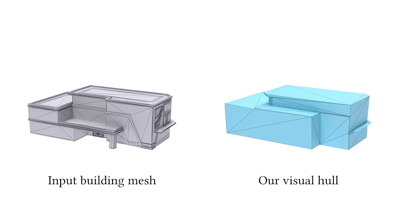To further reduce the visual difference between our visual hull and the input mesh, we carve redundant volume blocks from the visual hull to recover concave features.